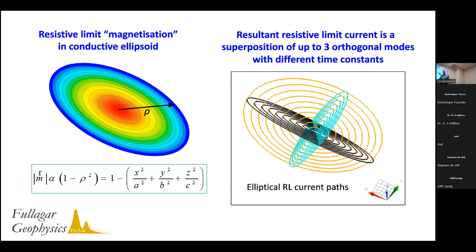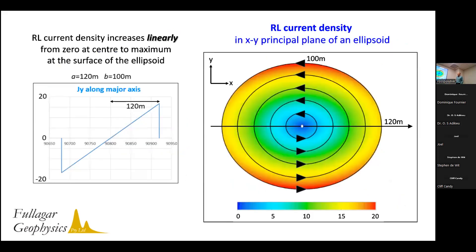The current flow pattern depends on exactly what orientation our primary field is, which determines which mode is excited. Looking at the current distribution for one mode: the current increases from the center to the outside edge. In a not-terribly-eccentric body, the current density is in fact stronger on the shorter dimension, because the net total current must be the same on both dimensions, giving an increase in current density in the shorter dimension of the ellipsoid.